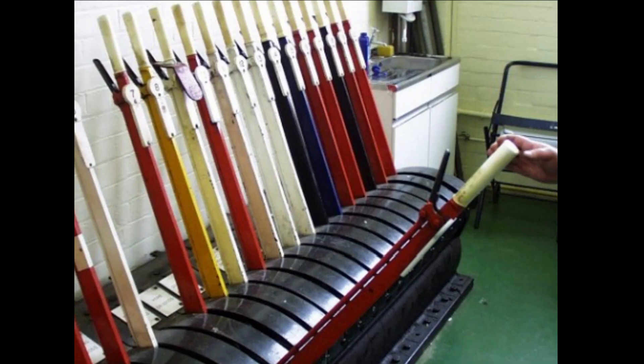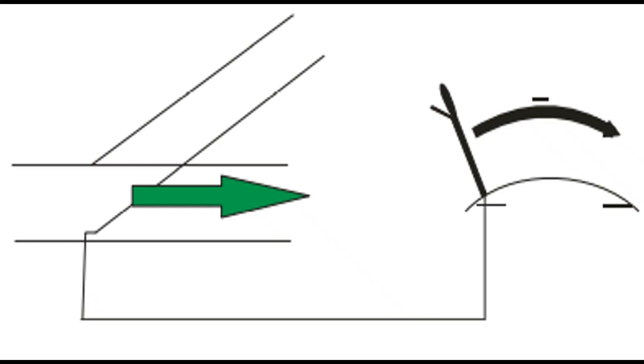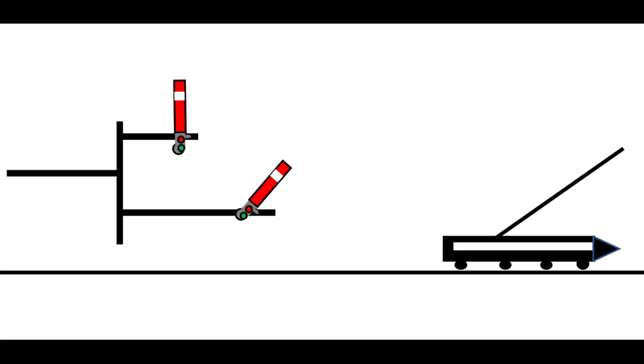We then look at levers and normal positions, how points are operated mechanically, and how diverging routes are signalled.